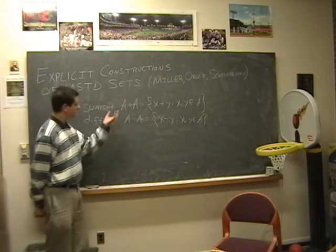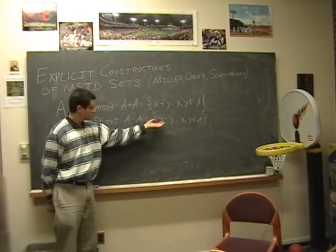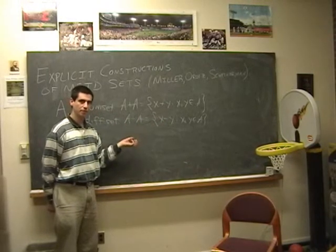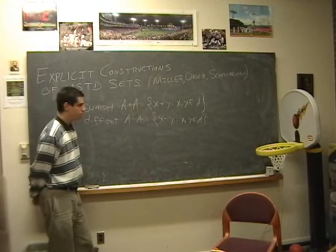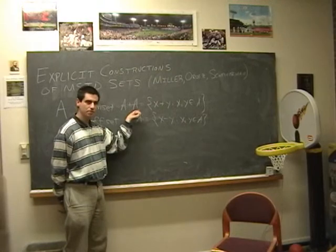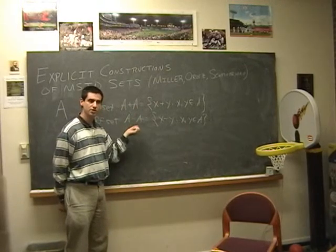At first you might think typically the sum set will be larger, because if I take x and y to be the same, they all collapse and keep giving me the same element zero. But as addition is commutative and subtraction is not, for two distinct elements it will contribute one sum to the sum set, but two differences to the difference set.